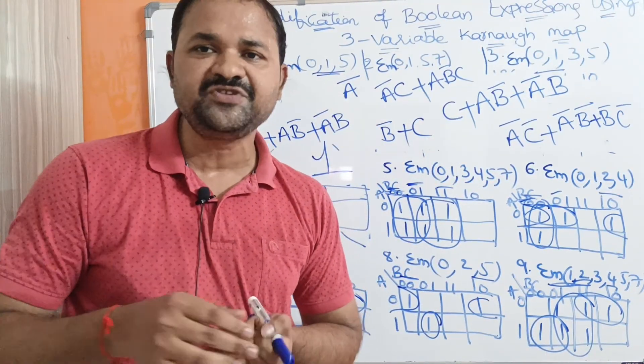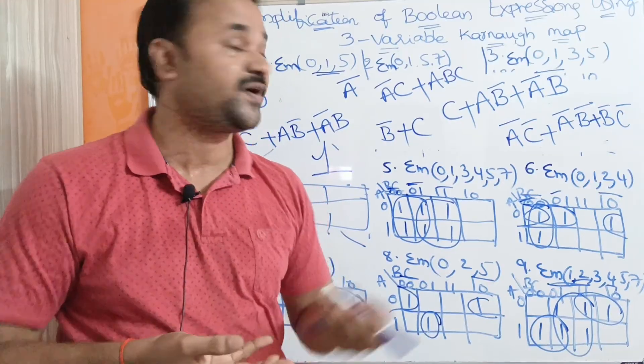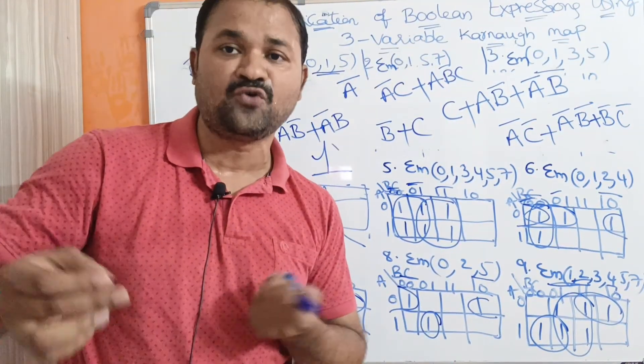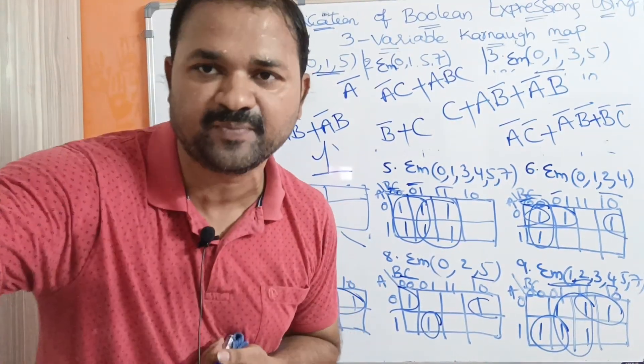In the next video, we will discuss how we can simplify Boolean expressions with the help of the 4-variable Karnaugh map.